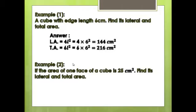Example 2: The area of one face of a cube is 25 cm². So we have L² = 25 cm². Find its lateral and total area.